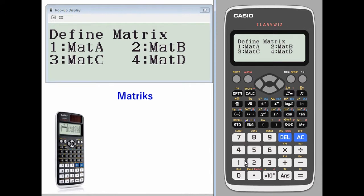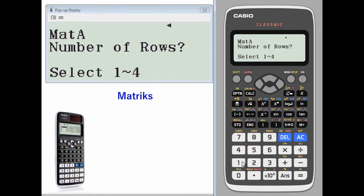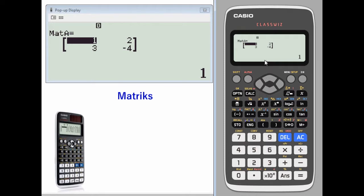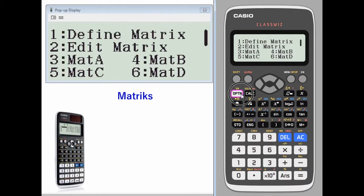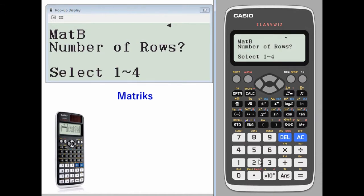First we have to define matrices. Let's define matrix A to be a 2 by 2 with the following values. Let's define matrix B to have the following values, also being a 2 by 2.